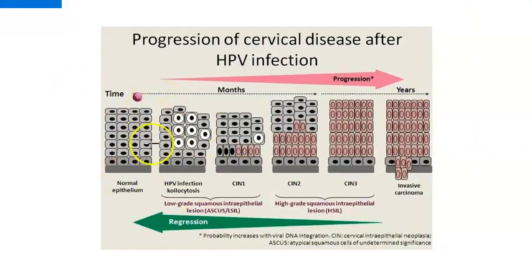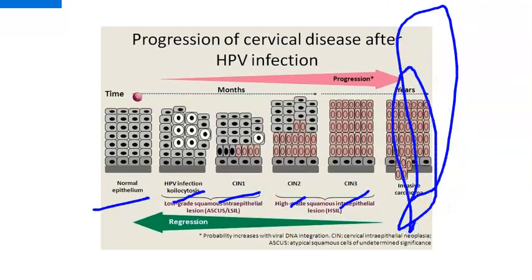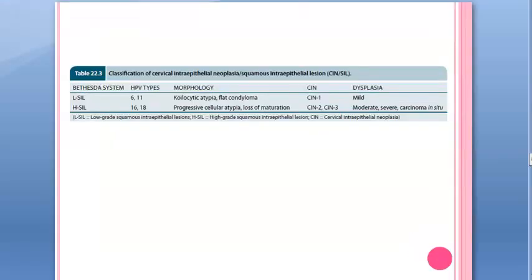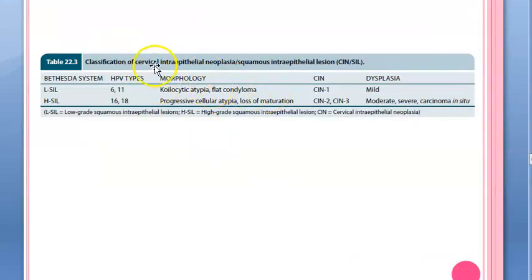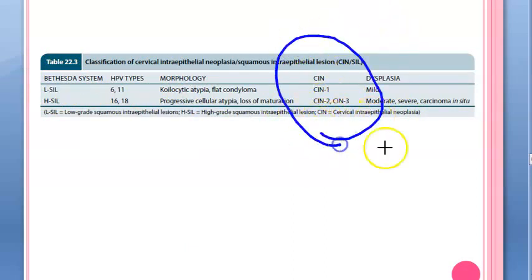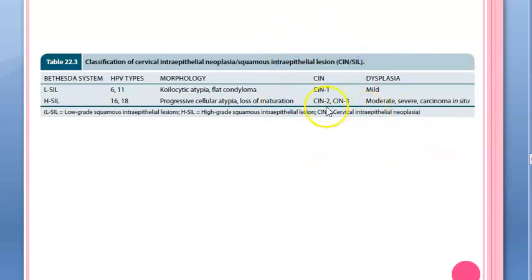Why are you bothered about the lymphatics? Because normal epithelium of the cervix can progress through CIN 1, CIN 2, CIN 3 to invasive carcinoma. CIN stands for cervical intraepithelial neoplasia. After CIN 1, 2, and 3, it will progress to carcinoma. In the Bethesda system, this is still an intraepithelial lesion before becoming carcinoma.